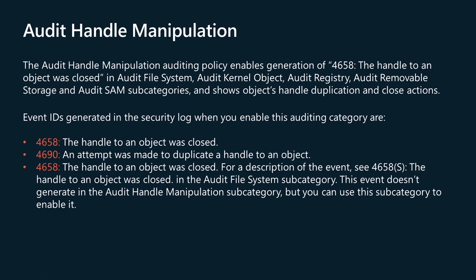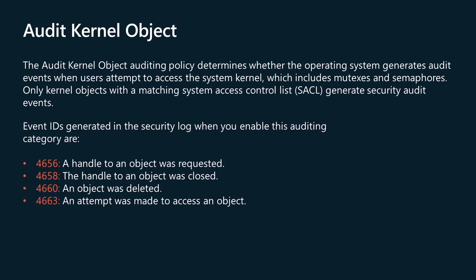The audit kernel object auditing policy determines whether the operating system generates audit events when users attempt to access the system kernel, which includes mutexes and semaphores. Only kernel objects with a matching system access control list, SACL, generate security audit events. The audits generated are usually useful only to developers. Typically, kernel objects are given SACLs only if the audit base objects or audit base directories auditing options are enabled. The audit the access of global system objects policy setting controls the default SACL of kernel objects. Items written to the security event log when this policy is enabled are listed in the documentation and on the screen.